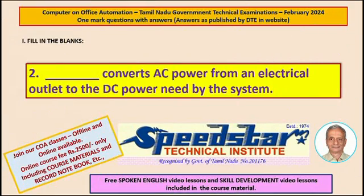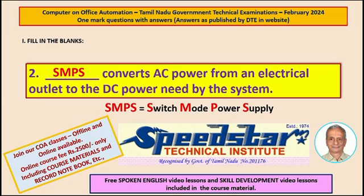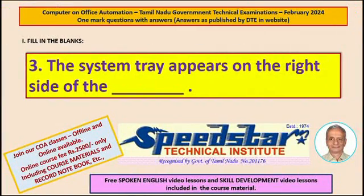Question 2: Dash converts AC power from an electrical outlet to the DC power needed by the system. The answer is SMPS. SMPS means Switch Mode Power Supply. Question 3: The system tray appears on the right side of the dash. The answer is Taskbar.